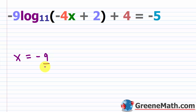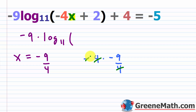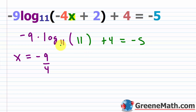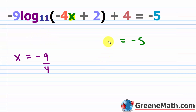Again, x is equal to negative 9 fourths. So I'm going to plug that in: negative 9 times log base 11 of negative 4 times negative 9 fourths. The 4s cancel, the negatives cancel, and you'd have 9. So this would be 9 plus 2, which is 11. Then plus 4, and this equals negative 5. What is log base 11 of 11? Well, 11 to the first power gives me 11, so log base 11 of 11 is just 1. Negative 9 times 1 is negative 9, and negative 9 plus 4 gives negative 5. So it does check out. You always want to make sure your solution works and that you don't have a domain violation — if you end up taking the logarithm of a negative number, reject that solution.